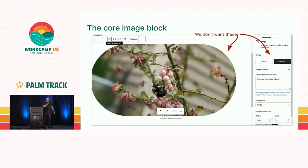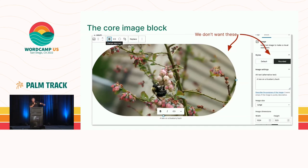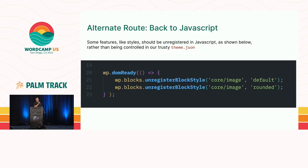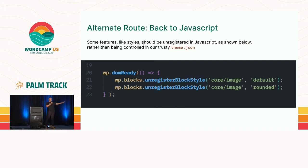This is the core image block. Right off the bat, we see these giant rounded corners that are possible with the image block — not something we saw in our designs anywhere. That's not going to match our designs, and it probably won't look good if one image has big rounded corners and nothing else does. For this, we're not going to use theme.json; we're going back to JavaScript — alternate route, make sure you catch that traffic metaphor. We're going to unregister the block style 'default' and 'rounded' for the core image block.